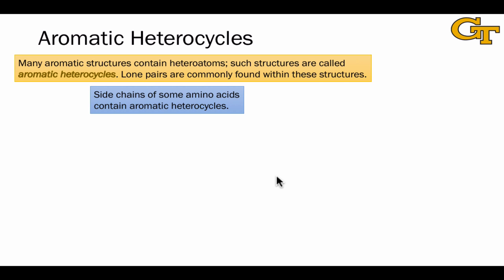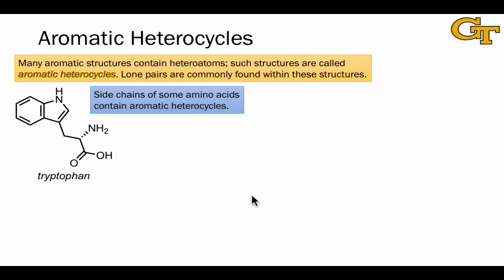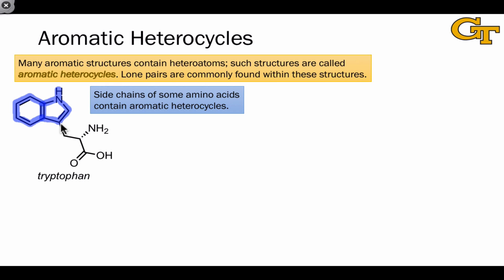One example of aromatic heterocycles found in nature and biochemistry are some side chains of the amino acids. The side chain of tryptophan, for example, includes an aromatic heterocycle containing a nitrogen atom. This is an example of what we call a fused heterocycle, in which a heterocycle and another aromatic ring — here a benzene — share a bond. This is what we refer to as an indole.